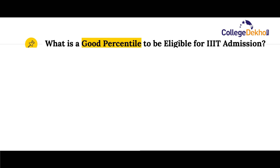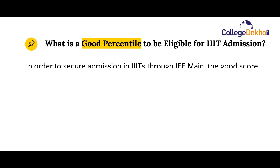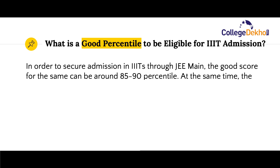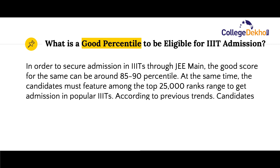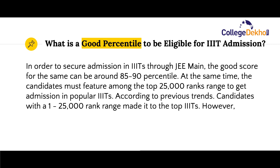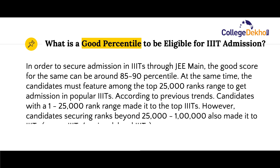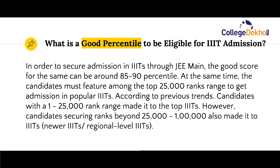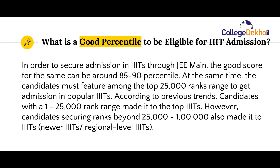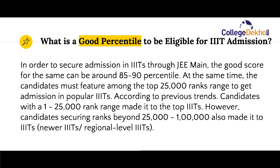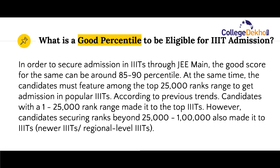Some NITs also closed ranks around 2 lakhs, mostly newer NITs. What is a good percentile to be eligible for Triple IT admission? To secure admission in Triple ITs through JEE Main, the good score can be around 85 to 90 percentile. Candidates must feature among the top 25,000 rank range to get admission to popular Triple ITs. Candidates securing ranks beyond 25,000 to 1 lakh also made it to newer or regional-level Triple ITs.